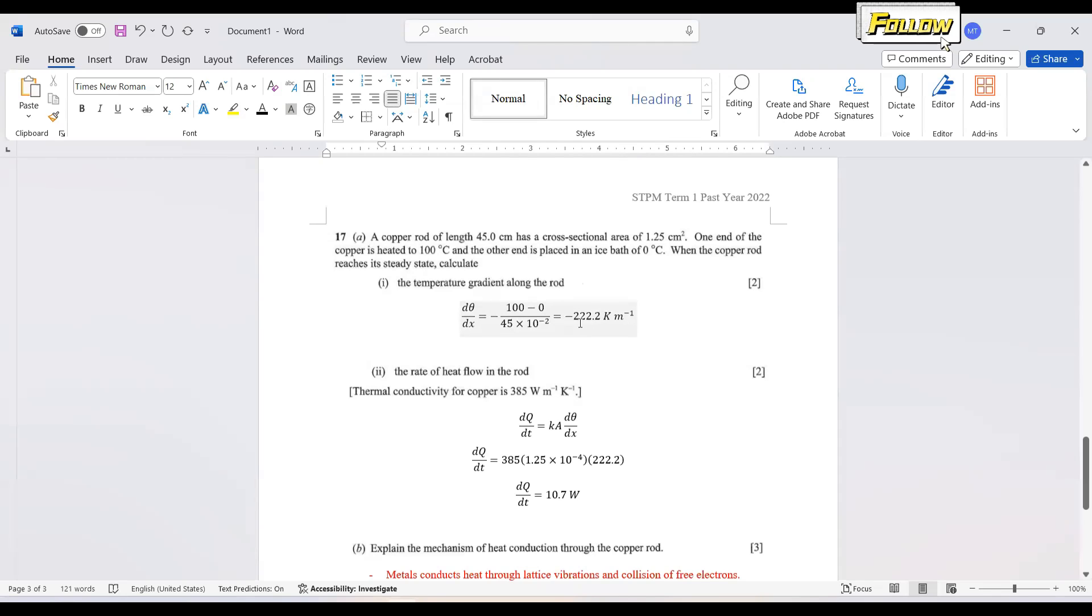So apply the formula and you should get the answer as negative 222.2 Kelvin per meter. So I guess we need to have the negative sign here since the temperature is reduced from 100 to 0 degrees Celsius according to the definition of the temperature gradient. And then the next question, rate of heat flow in the rod.